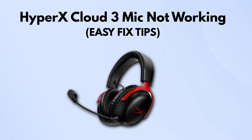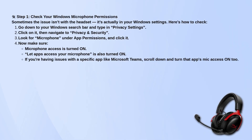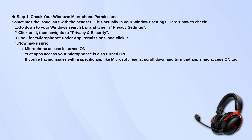First things first, sometimes the problem isn't with the headset itself, but with your Windows settings. To check that, go to your Windows search bar and type in Privacy Settings. Click on it, then go to Privacy and Security. Look for Microphone under App Permissions and click on it.